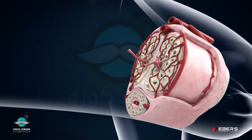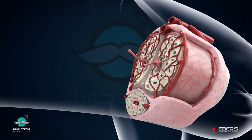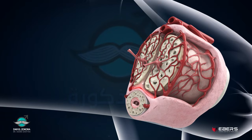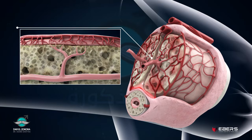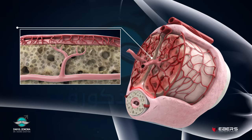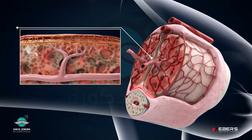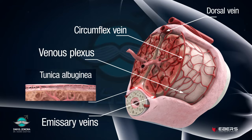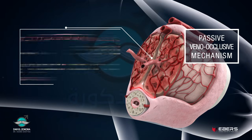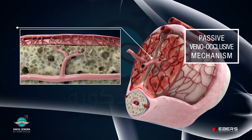The penis then expands and its size increases. Expanding trabeculae prevent venous drainage by compressing the emissary veins between the two layers of tunica albuginea, thus trapping blood and leading to full erection. This is what we call the passive veno-occlusive mechanism.